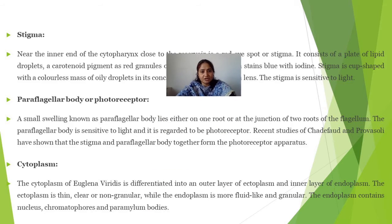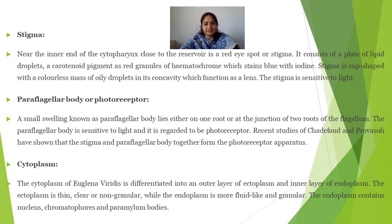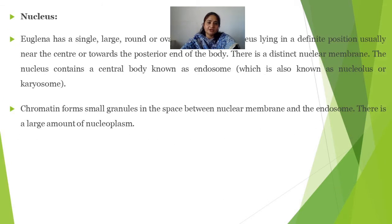The cytoplasm in Euglena is present in two layers: ectoplasm and endoplasm. The ectoplasm is thin, clear, and non-granular. The endoplasm is fluid-like and granular. The endoplasm contains the nucleus, chromatophores, and paramylum bodies.